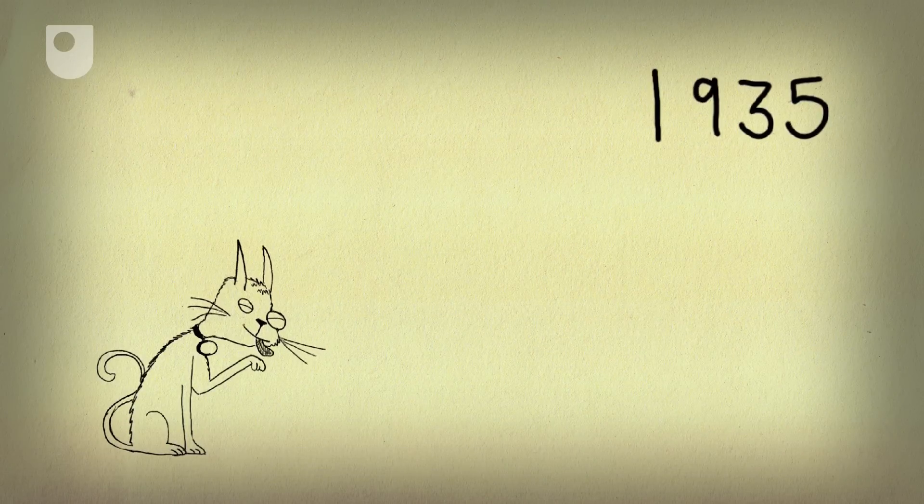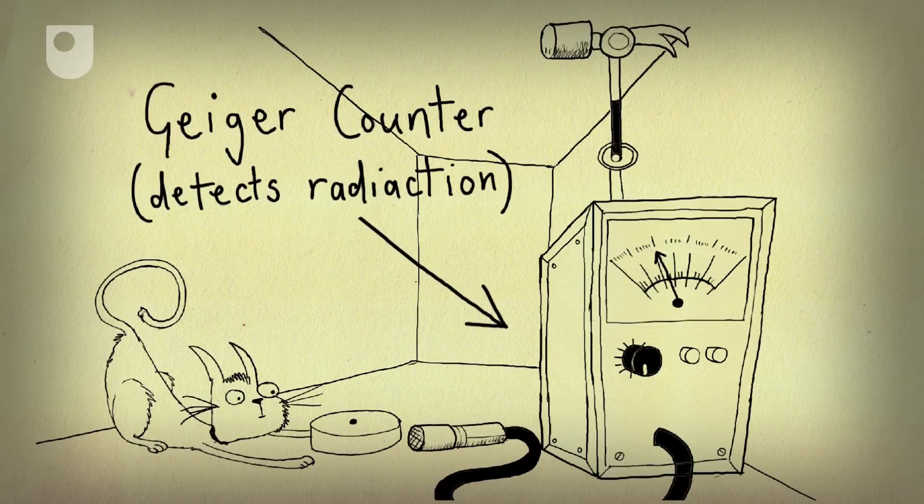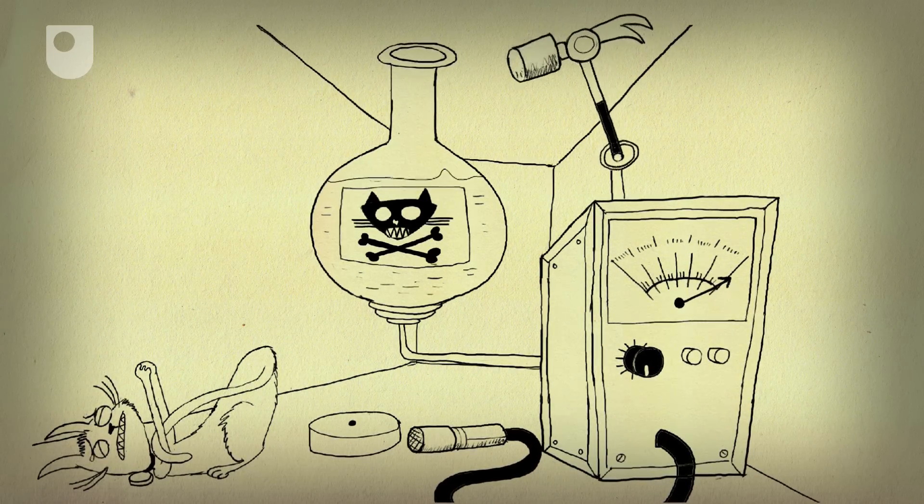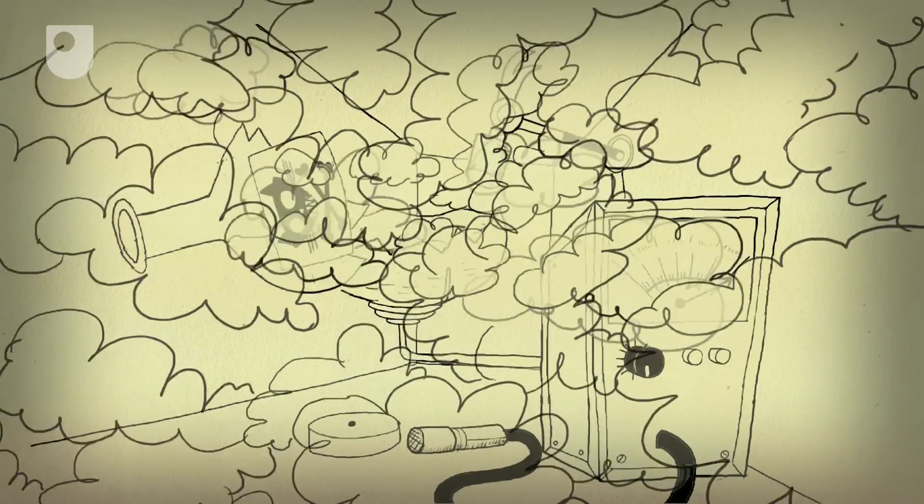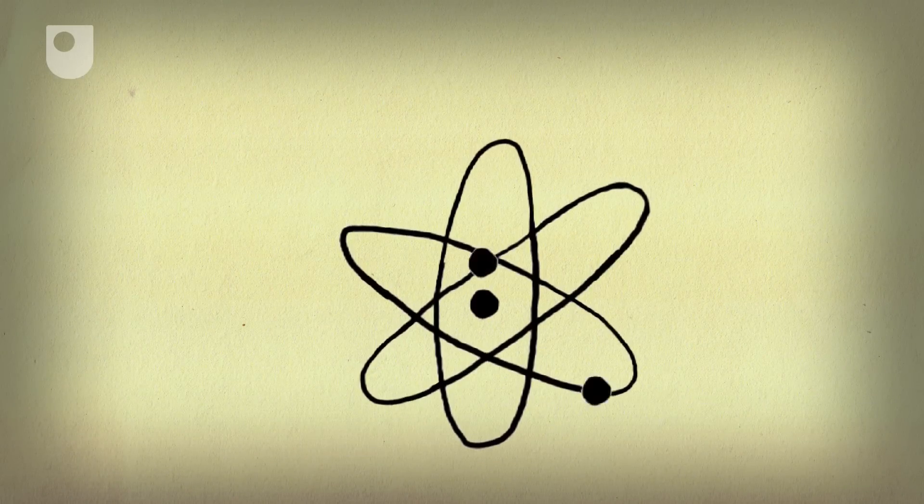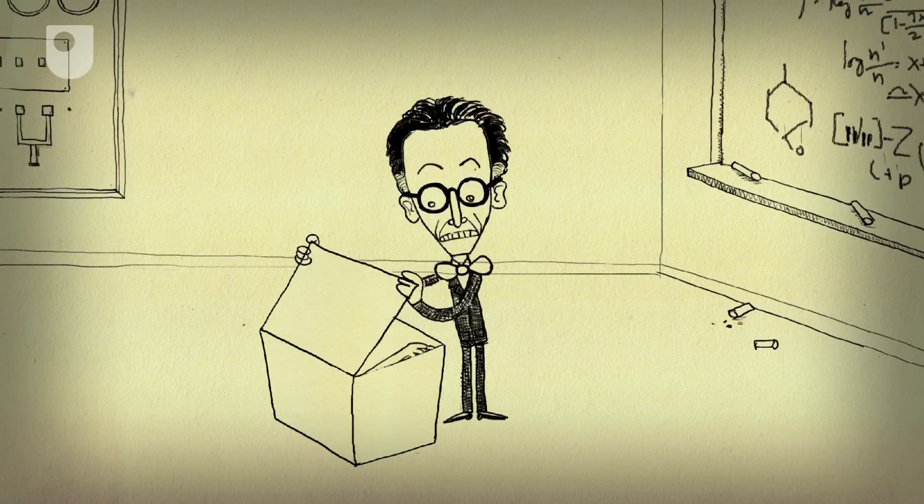To tackle that, Schrödinger imagined a cat in a box, with a radioactive particle and a Geiger counter attached to a vial of poison. If the particle decays, it triggers the Geiger counter, releases the poison, and bye-bye tittles. But if the particle is in two states, both decayed and not decayed, the cat is also in two states, both dead and not dead, until someone looks in the box.